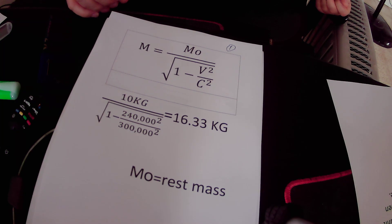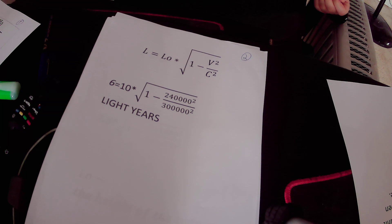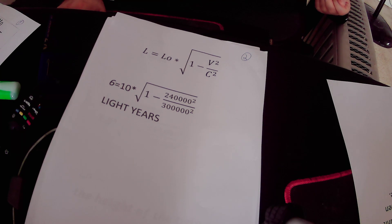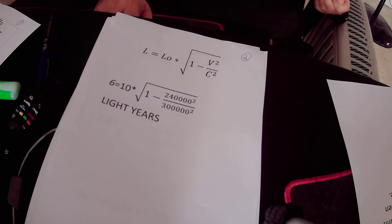Now I will talk about the second phenomenon that occurs when someone travels in space at very high speed. The second phenomenon is length contraction, or shortening of the distance. When you measure a distance between two objects that are not in motion relative to each other, that distance will shrink when one of them moves at a speed very close to the speed of light relative to the other.